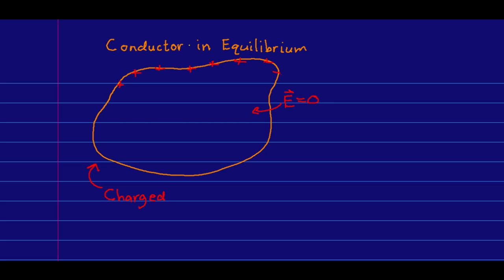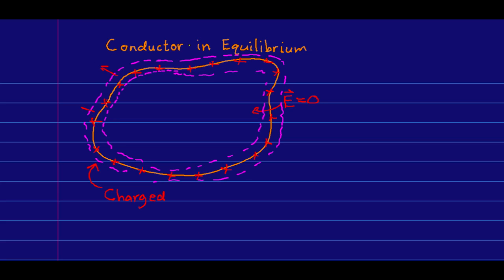Note what that means when we draw surfaces. I can draw a surface just inside the surface of the conductor, and again the charge inside that surface is zero, so the flux through it is zero, meaning there's no E field passing through that surface. But if instead I draw my closed surface just outside the conductor, now all that charge on the surface of the conductor is enclosed, and so there is a non-zero flux — telling us there is an E field outside the conductor caused by all the charge distributed over its surface.